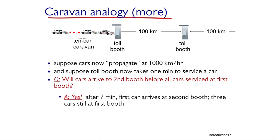Now, let's assume the speed of the car is 1,000 km per hour and the processing time at the booth is a full minute. In this case, the cars will reach the second booth even before the first booth finished processing all of them. A similar calculation yields a result where the first car gets to the second booth when there are still three cars waiting for processing in the first booth. This is an example of two booths representing two routers on the route. What happens if there are 100 routers?